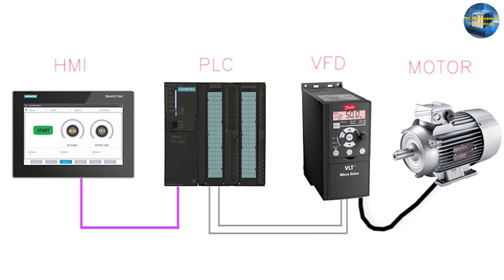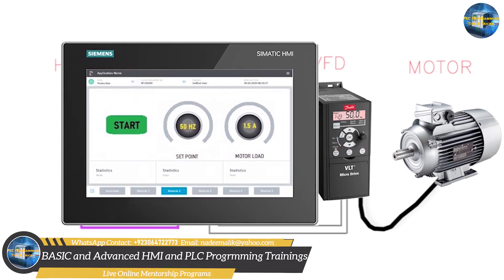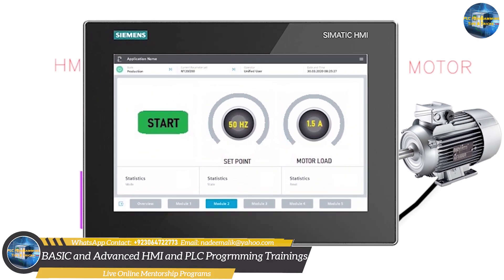Next we will control the speed of the motor. Then we will send the analog signal from the VFD back to the PLC — this signal can be the RPM of the motor, output frequency, or motor load. Finally, we will see how we can display this motor data on the HMI screen and how we can control the VFD from the HMI panel.